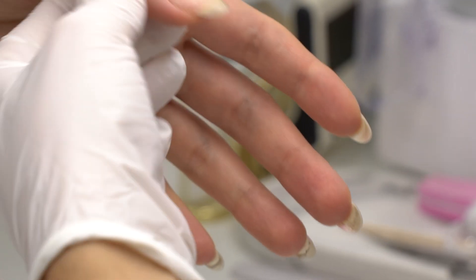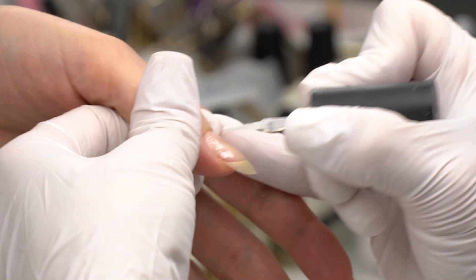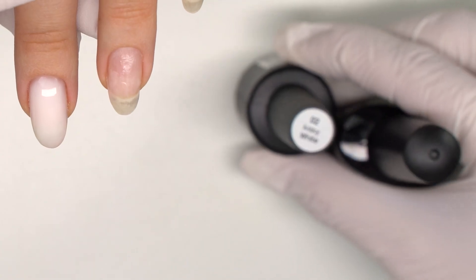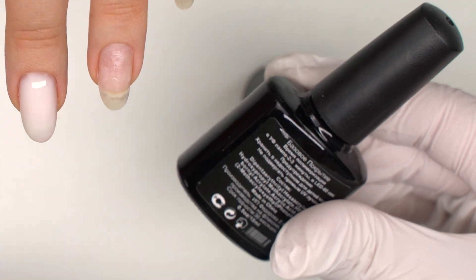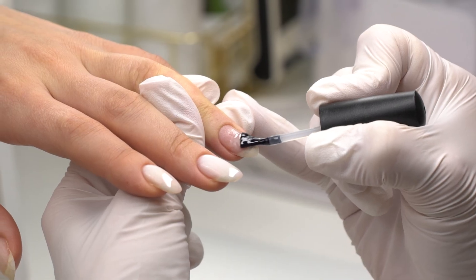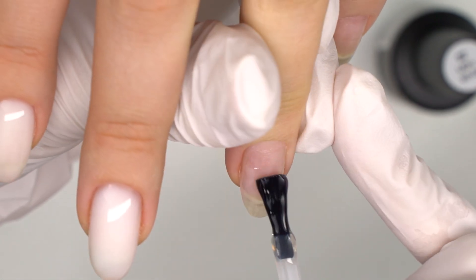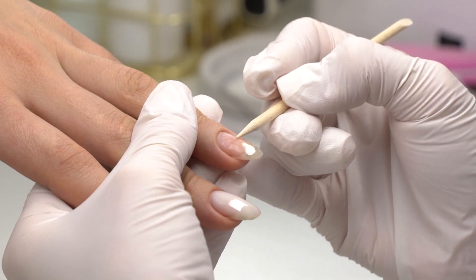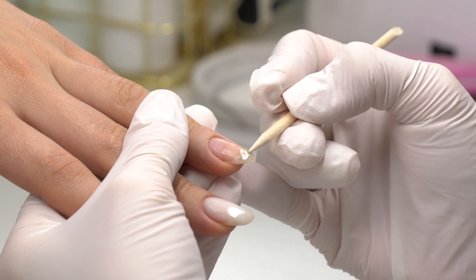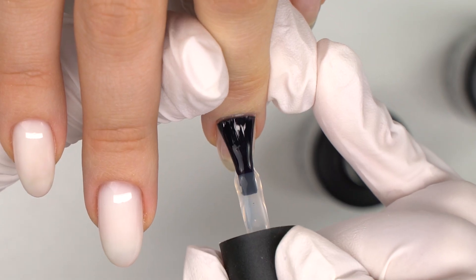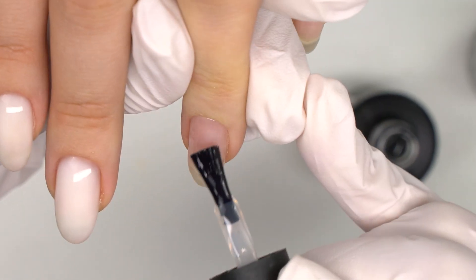Here's another key point. You often ask me how to safely switch from acidic to acid-free base coats when clients' nails are used to the former. Well, I recommend you go with an acidic base coat first and cover up one-third of the free edge at the tip, where it mostly peels off. Cure it and then cover up the nail with a non-acidic base coat.